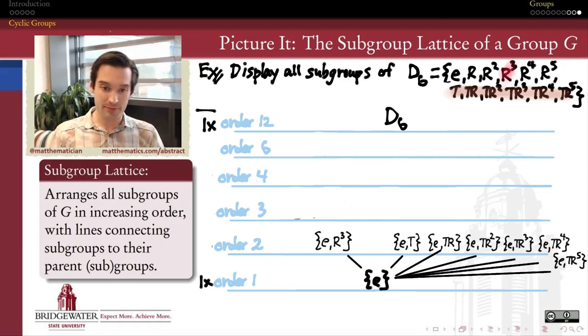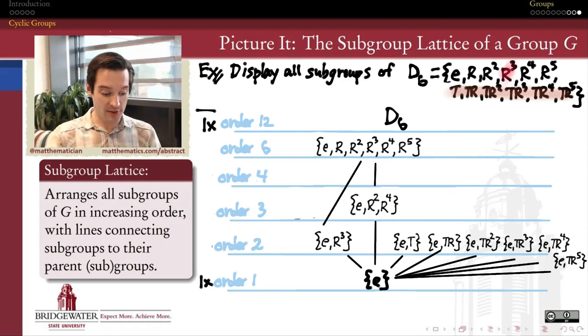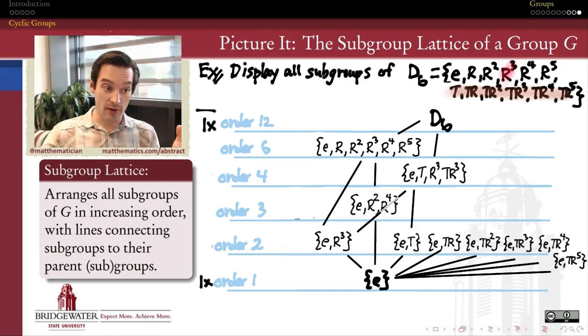As you start to work your way up the lattice, you find some subgroups of orders 3, 4, and 6, but the picture is much more complicated. So it's actually a really interesting question to try to figure out the subgroup lattice for a non-cyclic group in general. It's not one that we're going to tackle now, but the cyclic case is interesting enough for us to be satisfied.